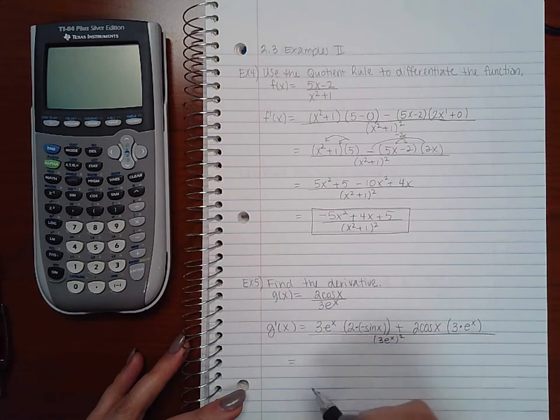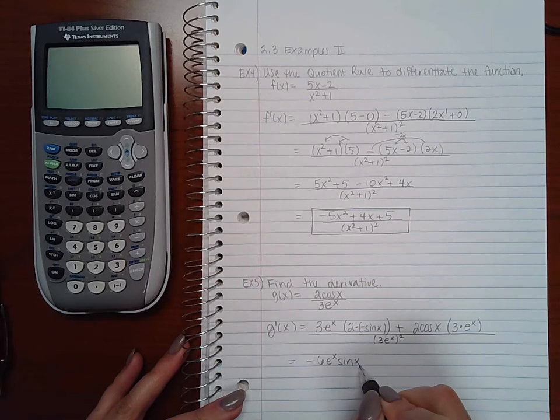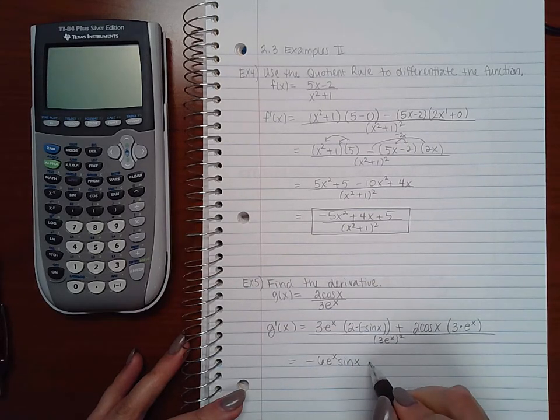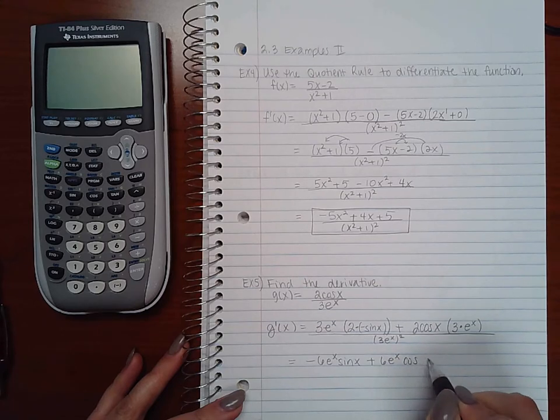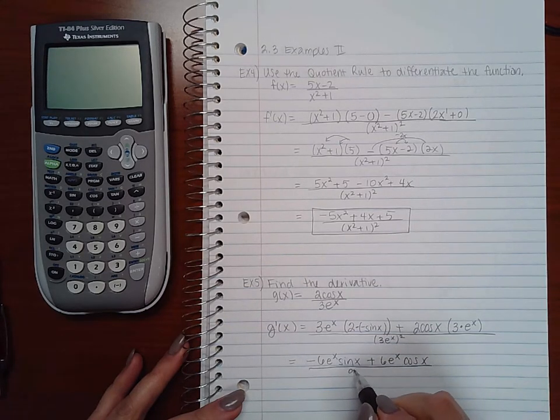So if I multiply this, I get negative 6 e to the x sine x. If I multiply this term out, I get 6 e to the x cosine x. And in the denominator, I get 9 e to the 2x.